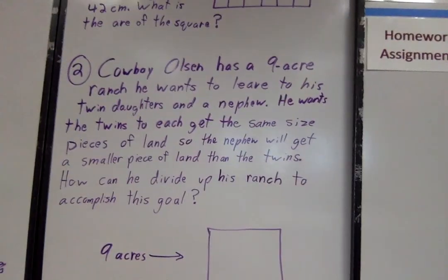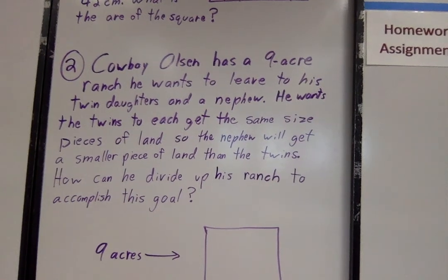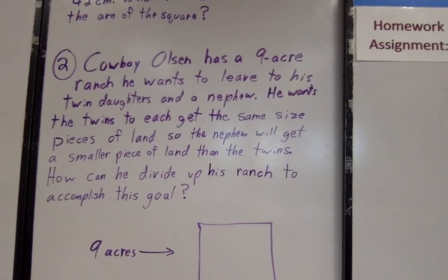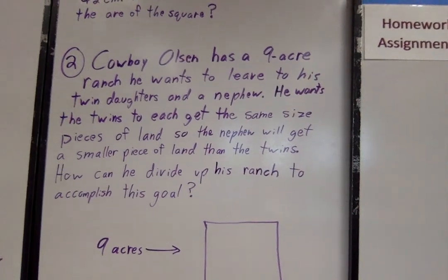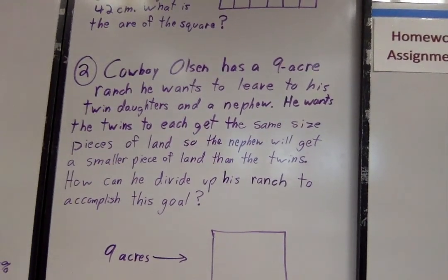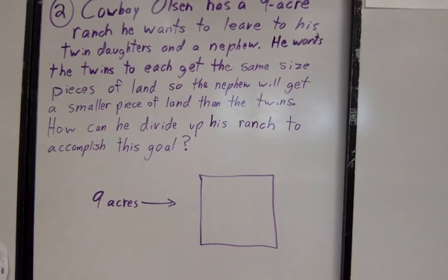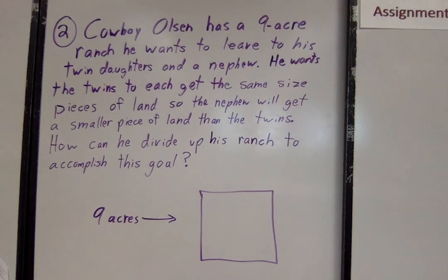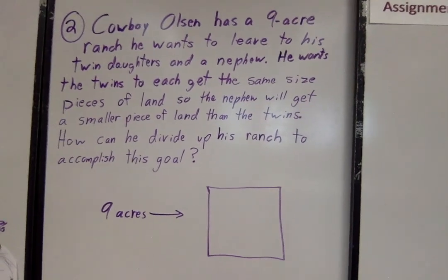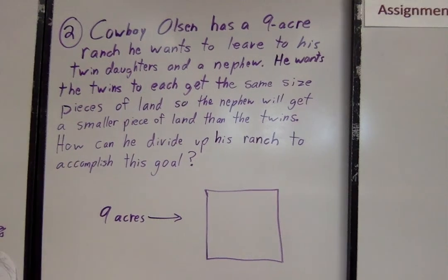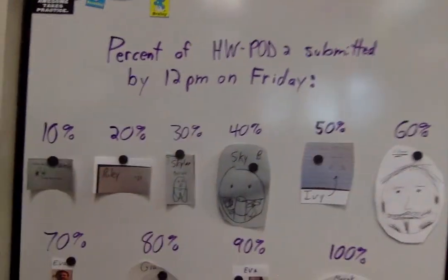Your second problem of the day: Cowboy Olson has a nine-acre ranch he wants to leave to his twin daughters and a nephew. He wants the twins to each get the same size pieces of land, but my nephew gets a smaller piece of land than the twins. How can I divide up my ranch to accomplish this goal? Draw yourself a little picture. Draw that square, imagine that square is nine acres. Turn it into a grid so you can see nine little acres in there. Now can you divide them up so that my two girls get the same exact amount and my nephew gets something, but not as much as the others? But please do it, because tomorrow is the day.